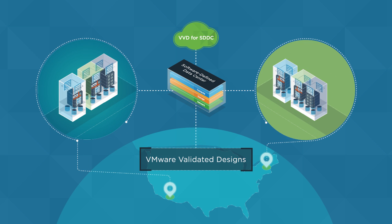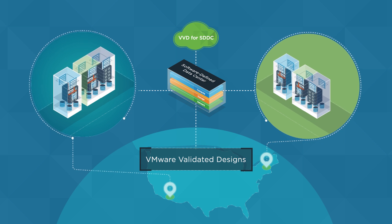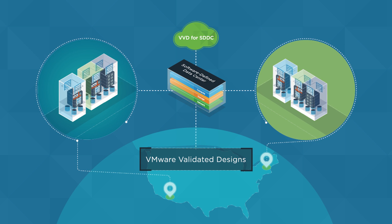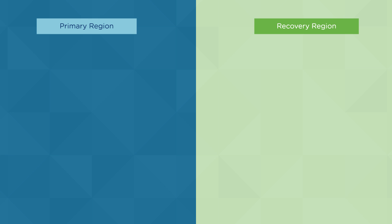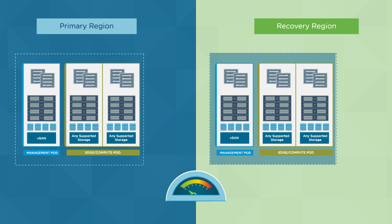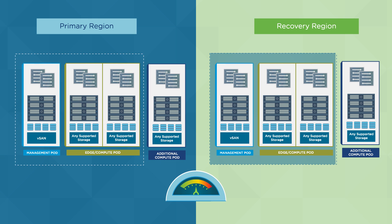The VMware validated design for software-defined data center supports a dual region layout, with each region being comprised of a single availability zone. In this design, two data centers are deployed in separate regions. One region is designated as the primary and the second as the recovery region. Each region actively runs the business workloads.